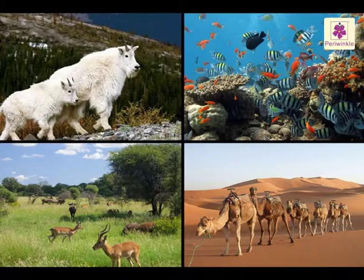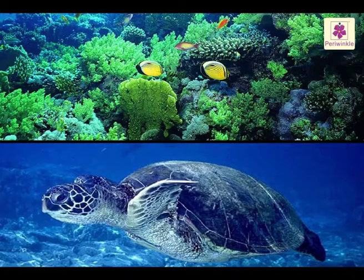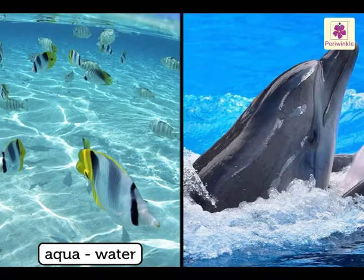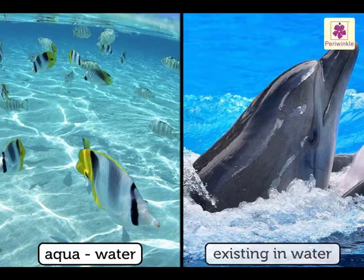All living things are adapted to live in their specific habitats. Let us see how the body structures of plants and animals that live in water are modified to suit the aquatic life. Aqua is a Latin word meaning water. Aquatic means existing in water.